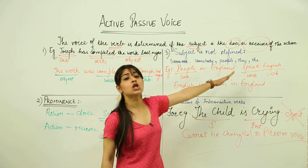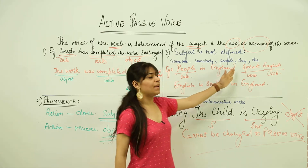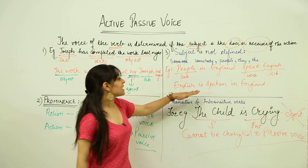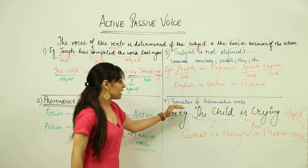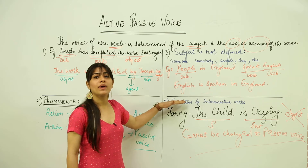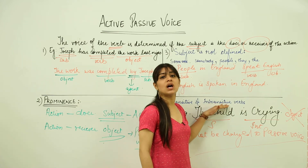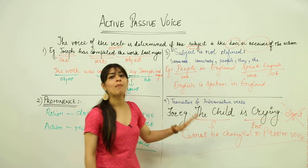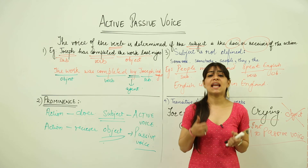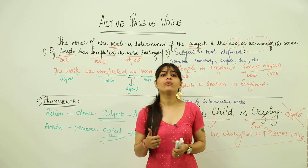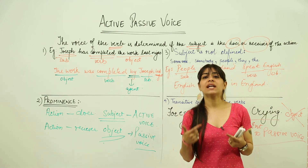In cases where the subject is not defined properly and words like someone, somebody, people, they, or 'the' are used, we tend to use the passive voice. The fourth rule is that in the case of transitive verbs, passive voice can be formed. But where we have an intransitive verb, we cannot convert active to passive voice because there is no object. So the entire concept of active and passive voice revolves around the verb, the object, and the subject of the sentence.